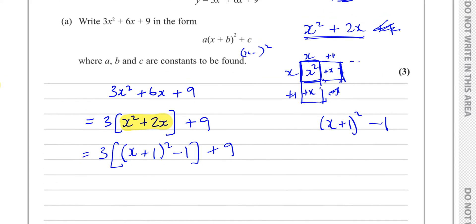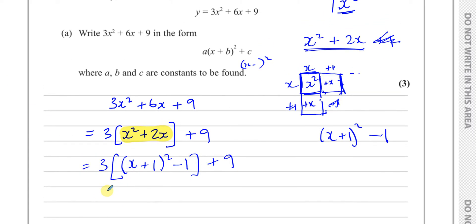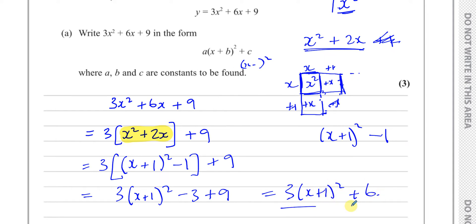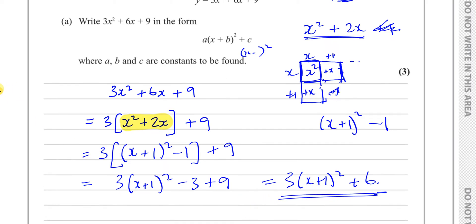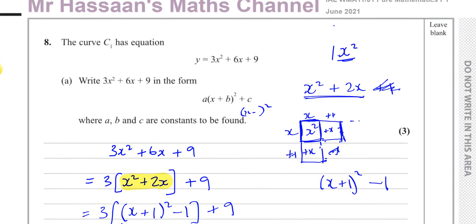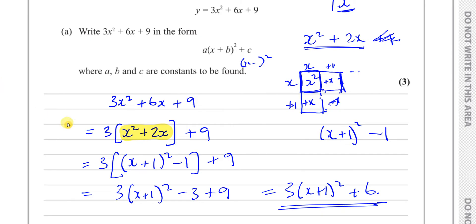Now tidying up: we have 3 times (x plus 1) squared, then 3 times minus 1 gives minus 3, and the 9 stays outside the bracket because it was never inside it. So the result is 3(x plus 1) squared plus 6. You can verify by expanding: 3(x squared plus 2x plus 1) minus 3 plus 9 gives 3x squared plus 6x plus 9, which matches what we started with.